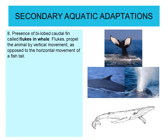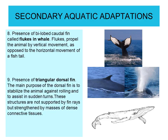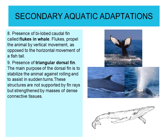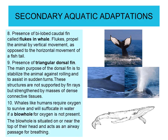Next is the presence of a bilobed caudal fin known as flukes in whales. Flukes propel the animal by vertical movement, as opposed to the horizontal movement of a fish tail. Next is the presence of a triangular dorsal fin, whose main purpose is to stabilize the animal against rolling and to assist in sudden turns. These structures are not supported by fin rays but are strengthened by a mass of dense connective tissue, as in the case of dolphins. Whales require oxygen to survive; the blowhole is situated on or near the top of the head and acts as an airway passage for breathing, and water fountains are frequently seen from blowholes in whales.